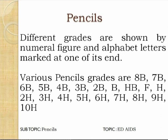Two intermediate grades are F and HB. Then in the H series, the grades are H, 2H, 3H, 4H, 5H — hardness is increasing and the color becomes more gray. So from soft and black pencils, we progress to harder and gray-colored pencils in increasing grade.